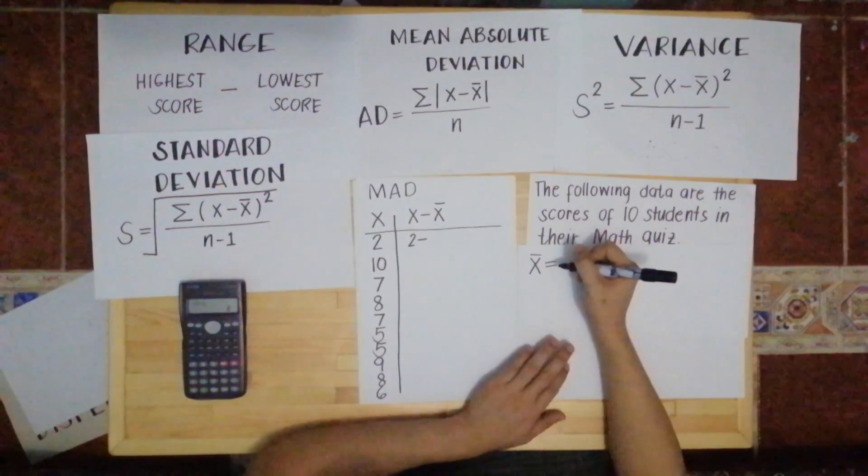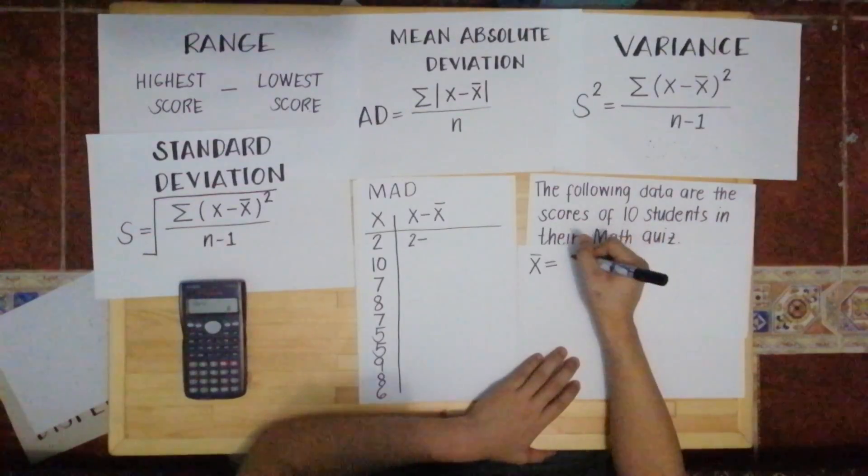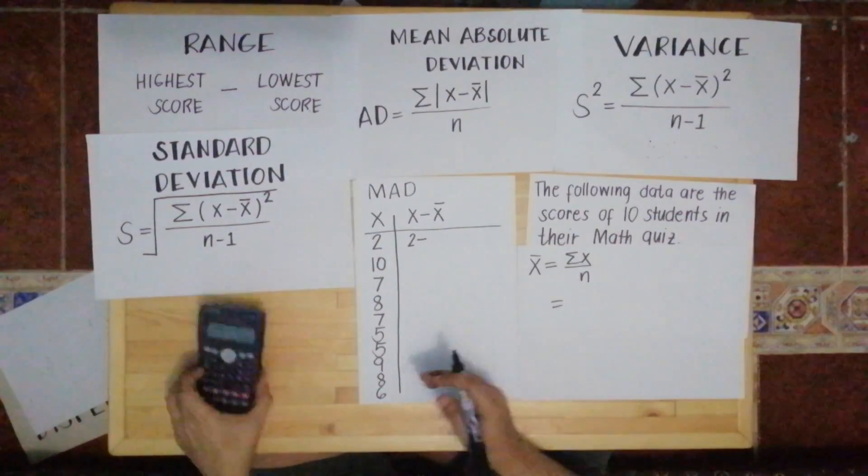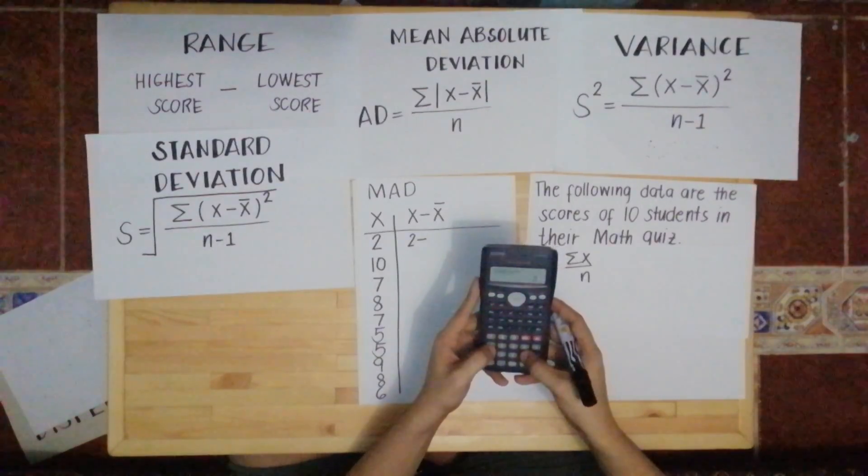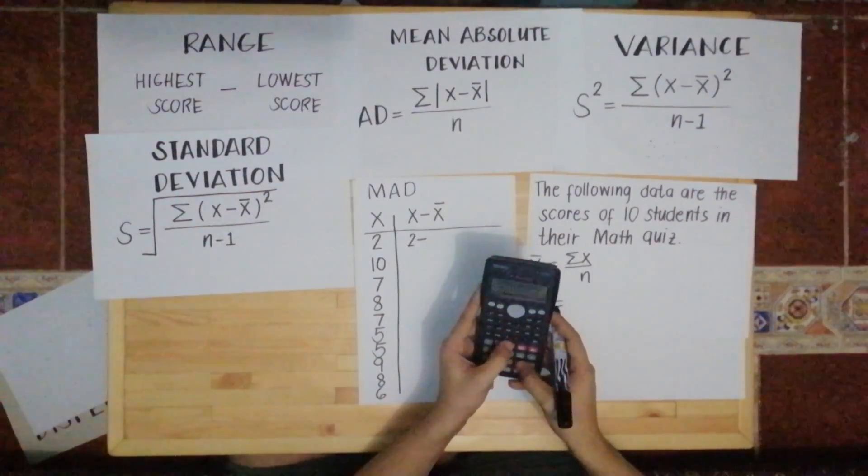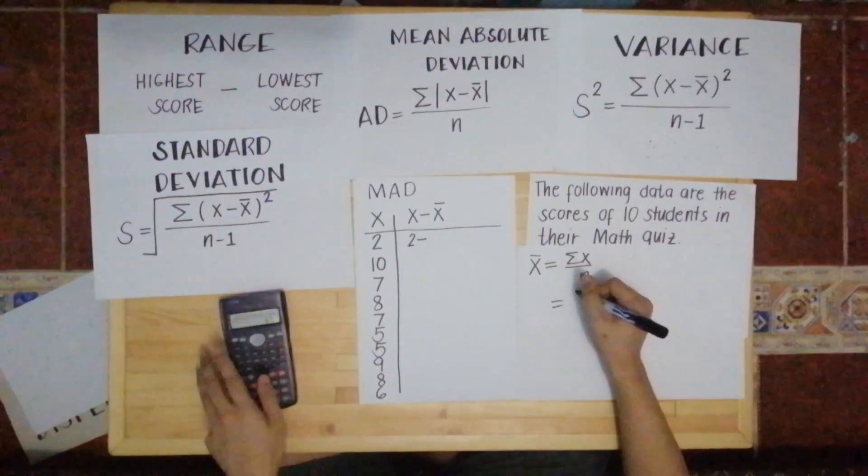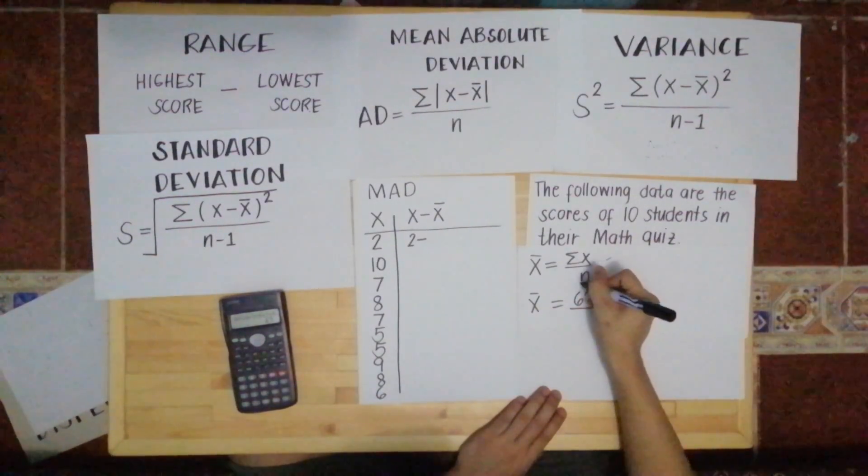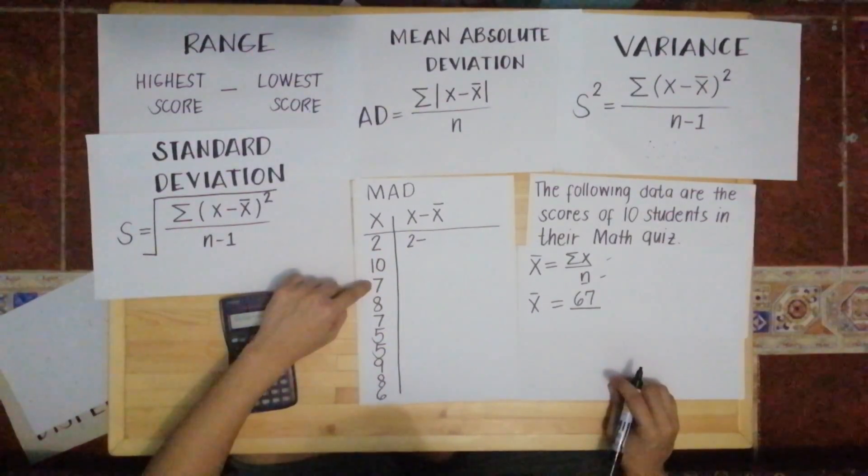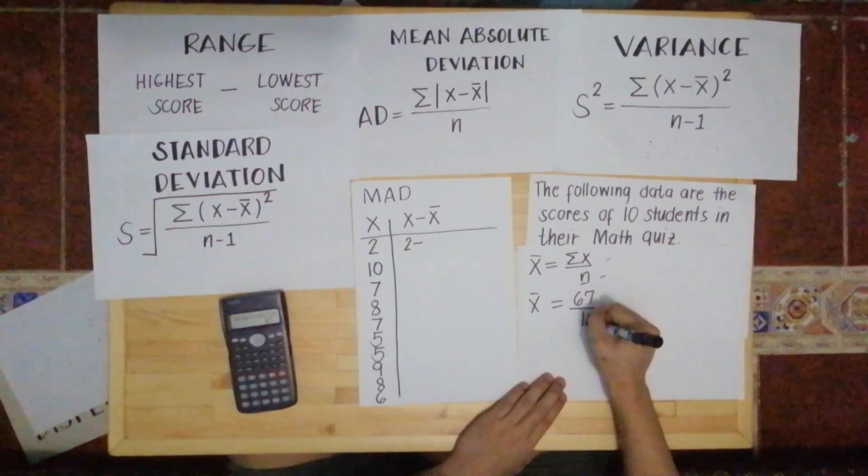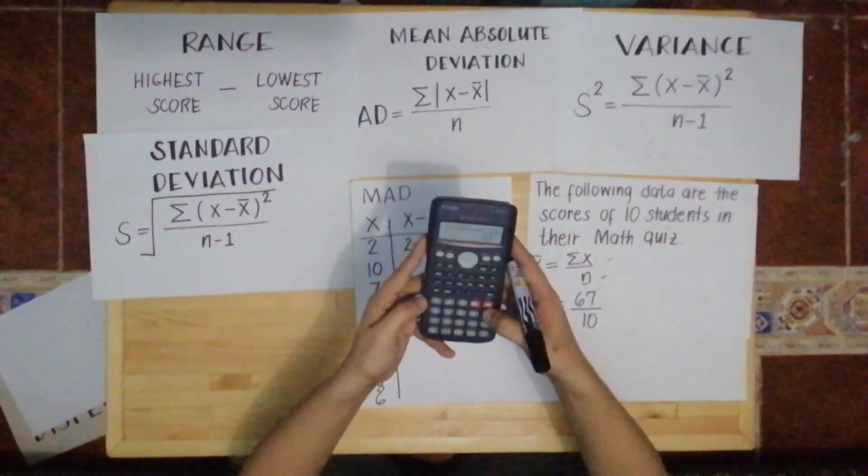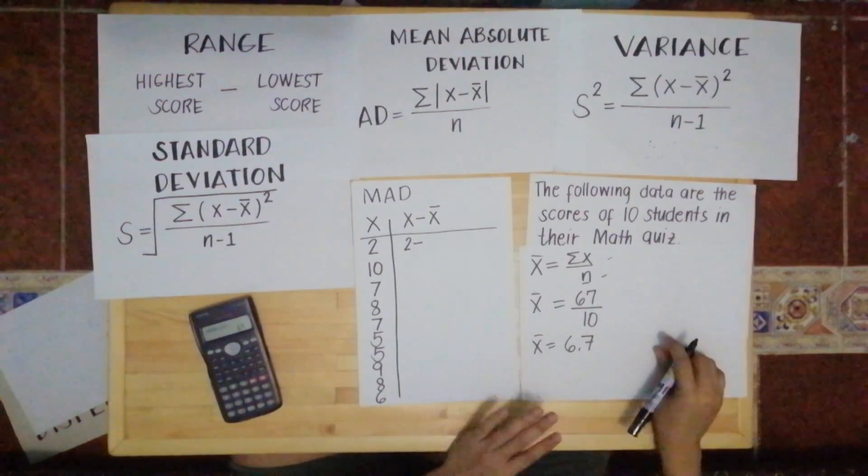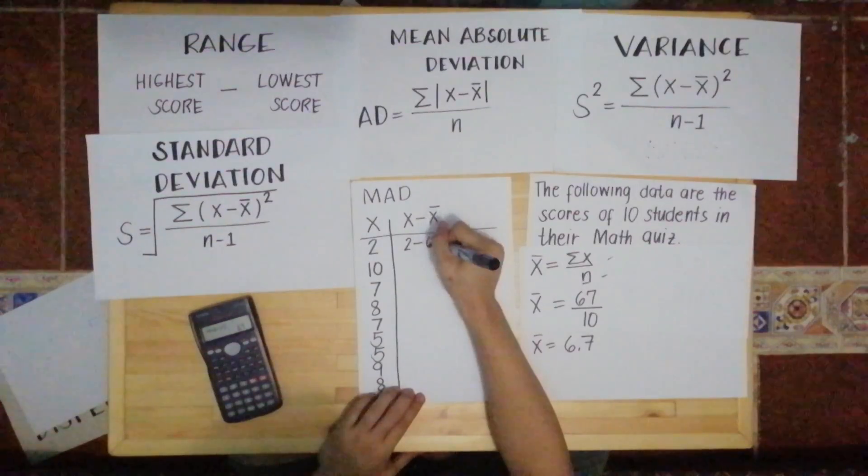The formula for the mean is summation of X over N. Summation of X means you just have to add all the scores. So we add 2 plus 10 plus 7 plus 8 plus 7 plus 5 plus 5 plus 9 plus 8 plus 6. The total is equal to 67. Then it's divided by N. The N is the number of scores, which is 10. So the mean equals 67 divided by 10, that is equal to 6.7. So this is the mean.